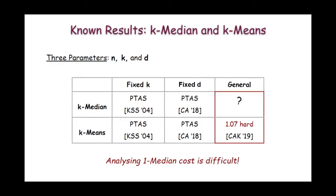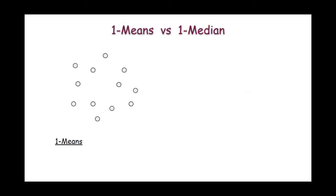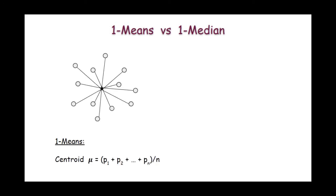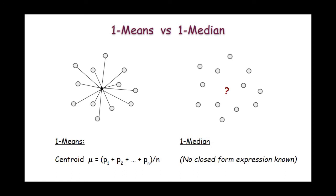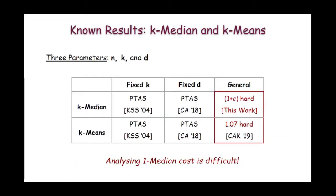So let us elaborate on this a bit more. Suppose we are given a set of clients and we want to compute the optimal 1-means — in other words, we want to open a facility which minimizes the sum of square distances from every client. However, such a result is not known for the 1-median problem. If we are given a client set and we want to open a facility location that minimizes the sum of the Euclidean distances to every other client, we do not know any closed form expression for the optimal 1-median, and this problem is famously known as the Fermat-Weber problem. Despite these difficulties, in this work we show hardness of approximation for the k-median problem, and this closes the open problem.